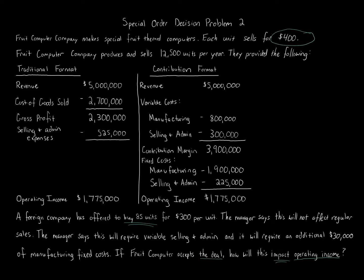If a company wants to buy at exactly the normal sales price, it's not an issue to sell unless you don't have the capacity to do so. But when the offer is below the sales price, we have to consider whether we should take this special order or not, taking into account all the facts involved.